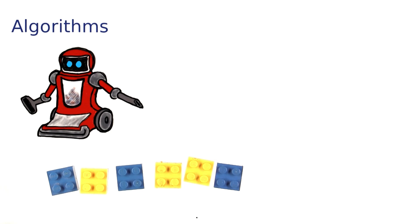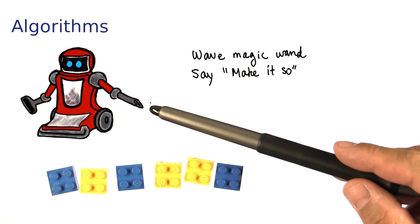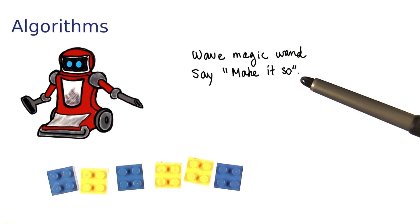Here's our first attempt at an algorithm. It's a sequence of steps. Robbie will wave his magic wand and say, make it so. Well, that's not really going to work. An algorithm has to be executable and not involve magic steps.